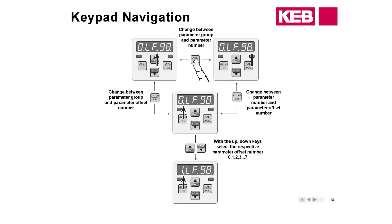In this example we're looking at the fault log. If you're wondering what faults you have or have seen, the most recent fault is going to be in parameter 0 LF 98 — that's the one that happened most recently. To view the next most recent fault, hit the Enter button; the flashing cursor will move to the left side of the screen, then arrow up to 1 and hit Function, and the corresponding fault will appear.